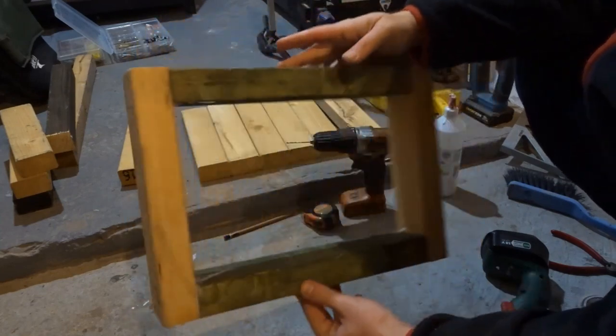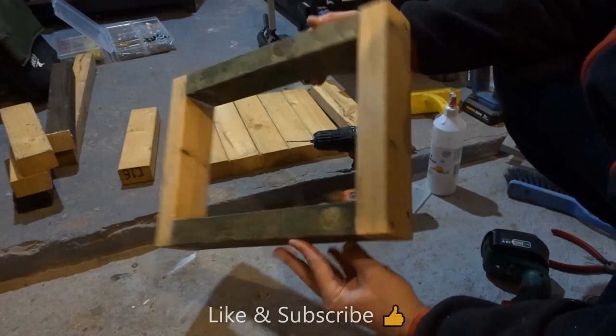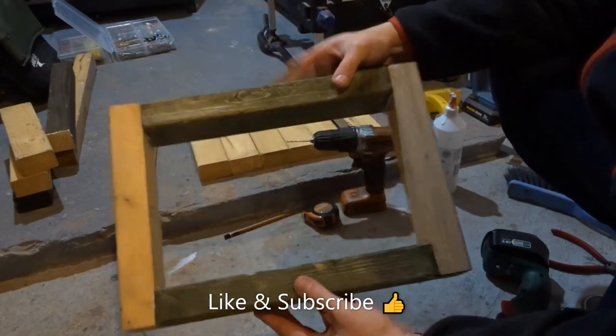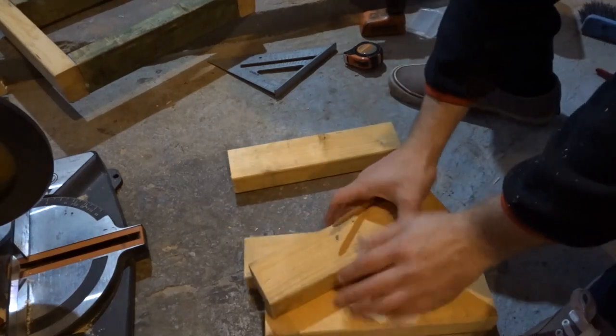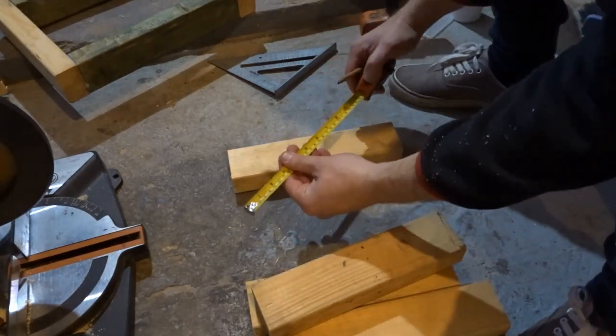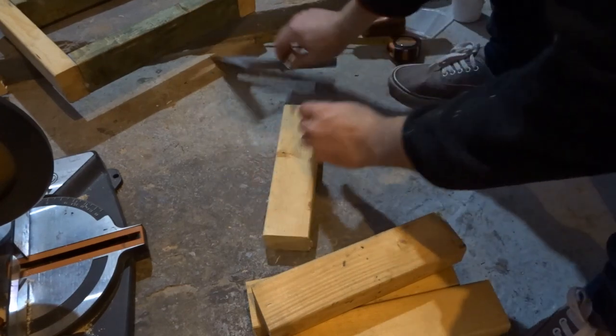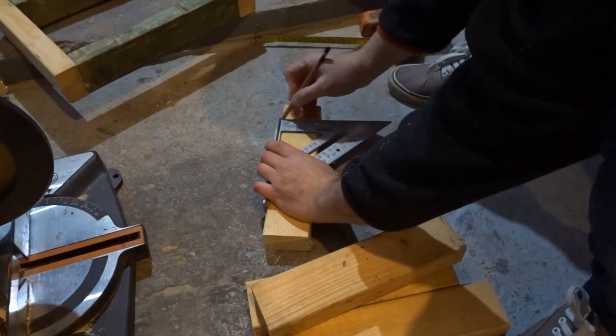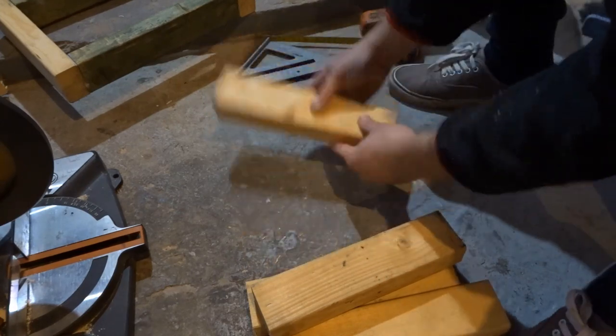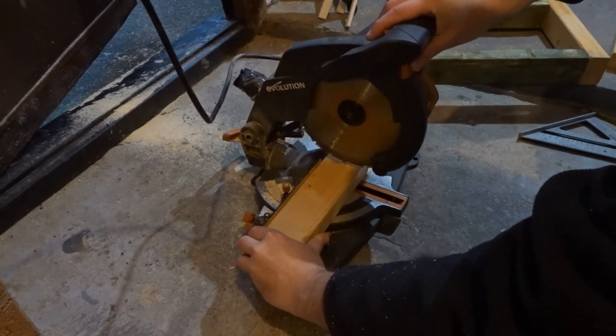There you can see the top frame finished. Now I wanted to work out a rough size for the legs and I think I settled on eight or nine inches. I'm just marking up the length with the set square and cutting the legs down on the miter saw.